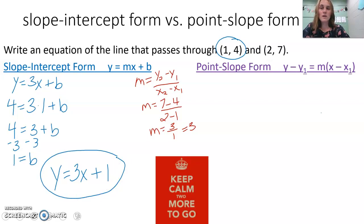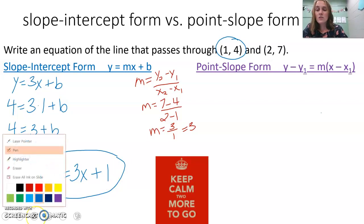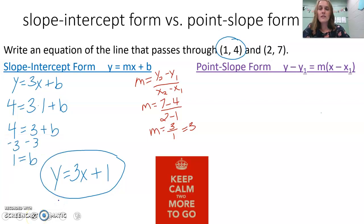y = 3x + 1. That's how we wrote our equation using slope-intercept form, given two points. Now what if we use point-slope form?